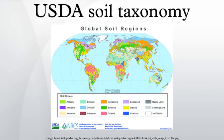USDA soil taxonomy, developed by the United States Department of Agriculture and the National Cooperative Soil Survey, provides an elaborate classification of soil types according to several parameters and in several levels: order, suborder, great group, subgroup, family, and series.